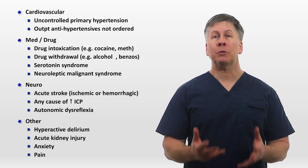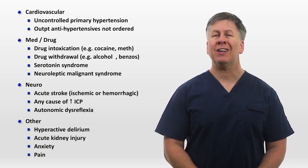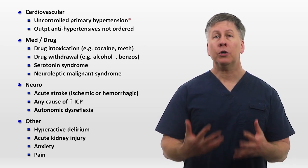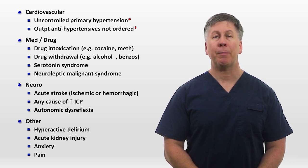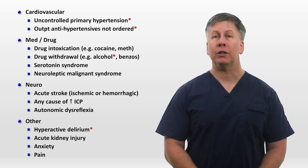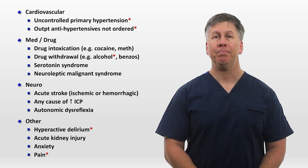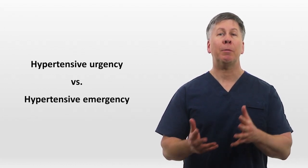In my experience as a hospitalist at a U.S. tertiary care center, the most common etiologies of acute hypertension that I see are uncontrolled primary hypertension, a lack of the patient's outpatient antihypertensives, alcohol withdrawal, hyperactive delirium, and inadequately controlled pain. When evaluating a patient with acute hypertension, it is critical to distinguish between hypertensive urgency and hypertensive emergency.